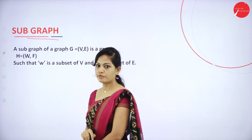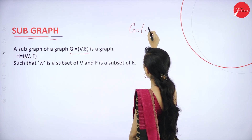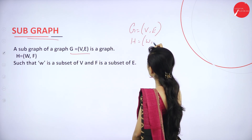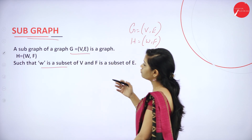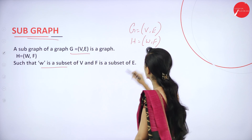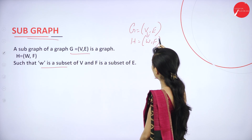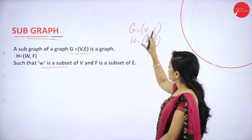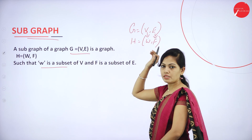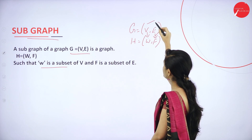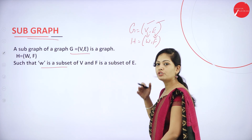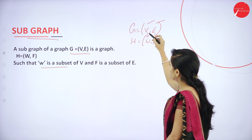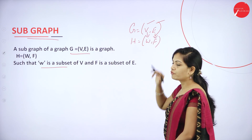Next is subgraph. A subgraph of a graph G=(V,E) is a graph H=(W,F) such that W is a subset of V and F is a subset of E. So you have already studied subset concepts in set theory. Graph G=(V,E) has vertices V and edges E. The subgraph H=(W,F) takes W as a subset of vertices and F as a subset of edges.